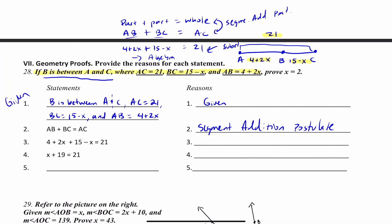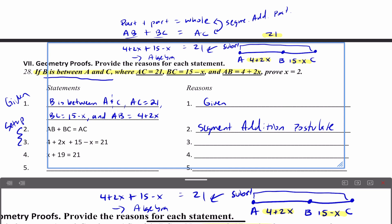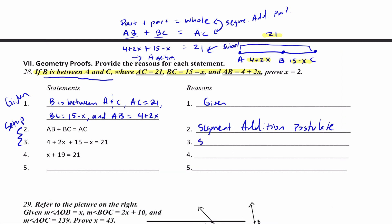Right here I was in the given stage — using what I have or can assume. Statements 2 and 3 are the setup phase, because statement 2 is the Segment Addition Postulate. Then statement 3 I'm going to start replacing: AB is 4 plus 2X, BC is 15 minus X, and the whole thing is 21. That's the substitution property.